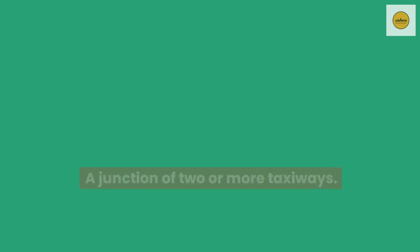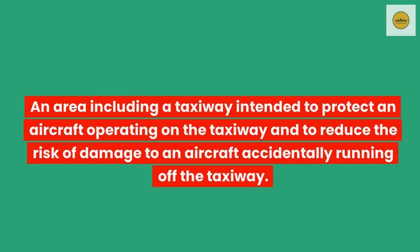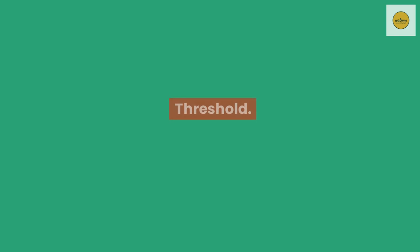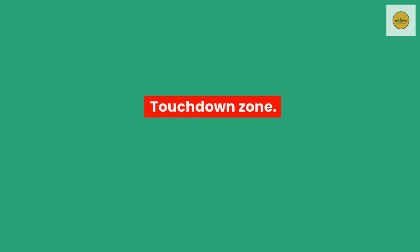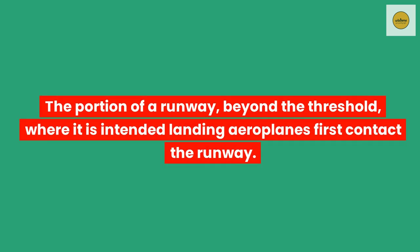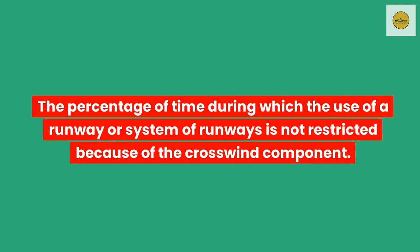Taxiway intersection. A junction of two or more taxiways. Taxiway strip. An area including a taxiway intended to protect an aircraft operating on the taxiway and to reduce the risk of damage to an aircraft accidentally running off the taxiway. Threshold. The beginning of that portion of the runway usable for landing. Touchdown zone. The portion of a runway, beyond the threshold, where it is intended landing aeroplanes first contact the runway. Usability factor. The percentage of time during which the use of a runway or system of runways is not restricted because of the crosswind component.